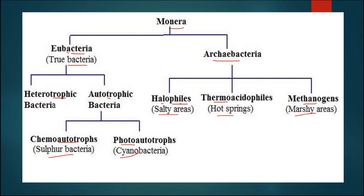Cyanobacteria are also capable of fixing atmospheric nitrogen into the soil, increasing soil fertility. They have specialized structures called heterocysts between the cell body, which make blue-green algae capable of fixing atmospheric nitrogen into nitrite and nitrate forms in the soil. Heterotrophic bacteria include saprotrophs, which decompose decaying materials and clean our environment, and parasites responsible for various diseases in humans and animals.